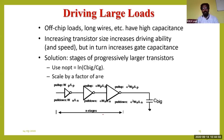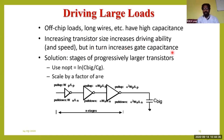Off-chip loads and long wires have large capacitances. Large capacitances are formed in off-chips, which are different kinds of chips not on one particular integrated circuit. A long wire also has a large capacitance. Increasing the transistor size increases the driving ability and also the speed, but the trade-off is that it also increases the gate capacitance.